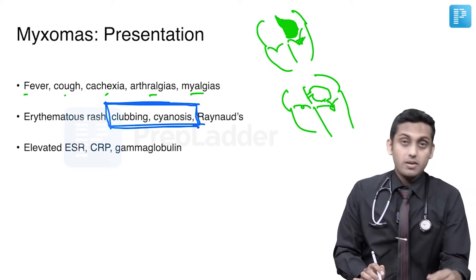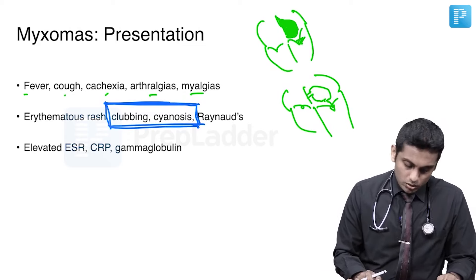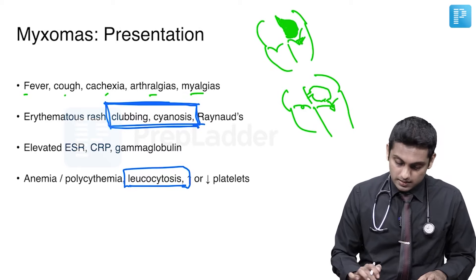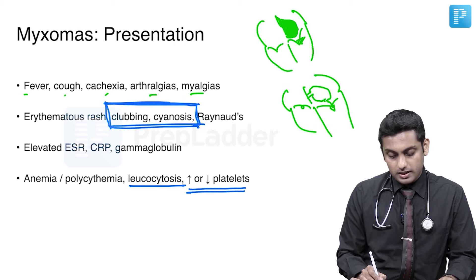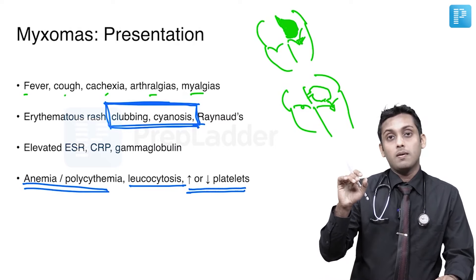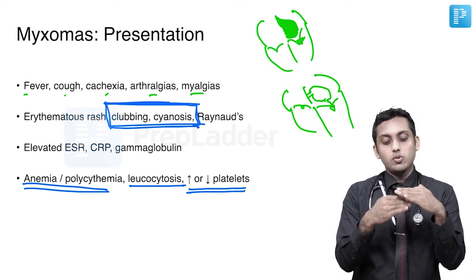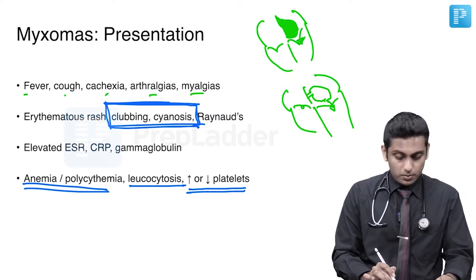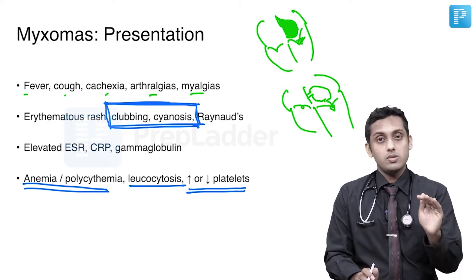Elevated ESR, CRP, and gamma globulin are present in multiple conditions, so they are not very specific. When it comes to blood workup, it is usually associated with leukocytosis. For platelets and RBCs, be careful — they can have both elevated or decreased platelet counts, and both anemia or polycythemia. An MCQ could ask which is not a manifestation on CBC; both anemia and polycythemia are correct because both can occur. Leukopenia is not seen — it is only leukocytosis.